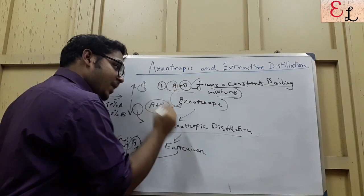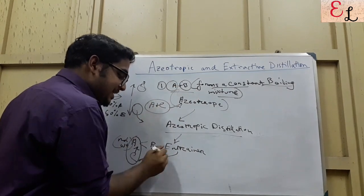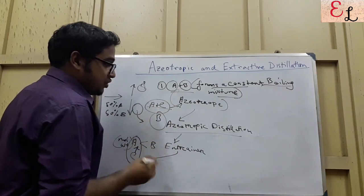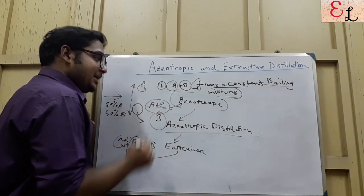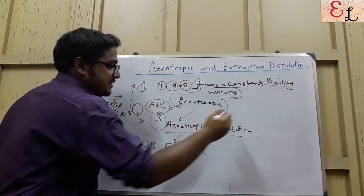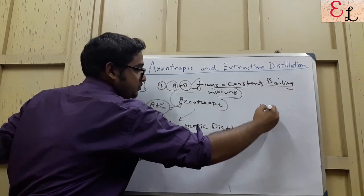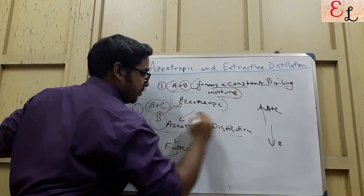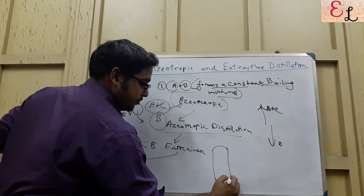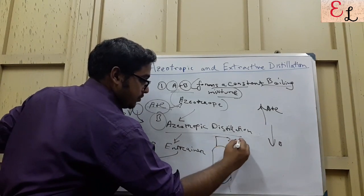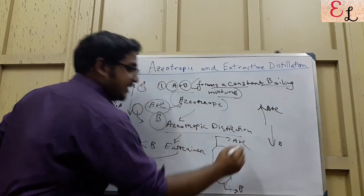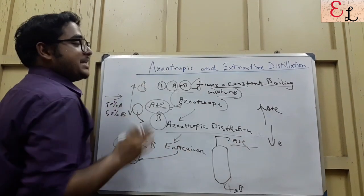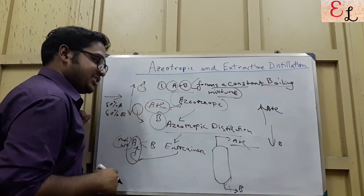In the beginning A and B were an azeotrope, but as we feed in C it forms an azeotrope with A, and thereafter B gets separated. So if we have to separate B and A, A plus C goes up from the distillation column and B goes to the bottom. A challenge that remains is the separation of A plus C, because now A plus C is forming an azeotrope — that's a problem associated with azeotropic distillation.